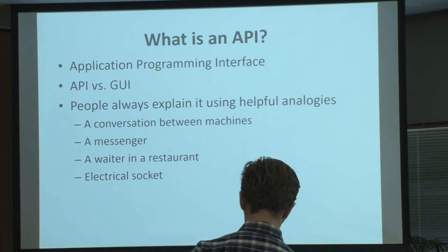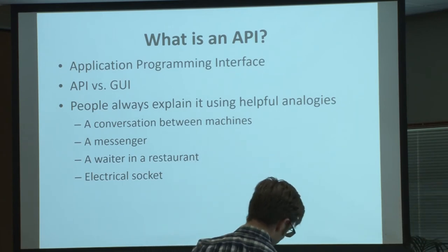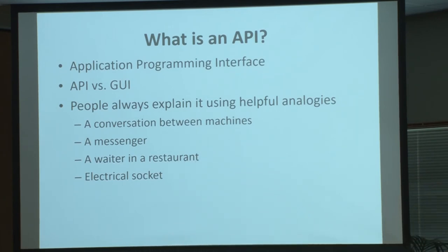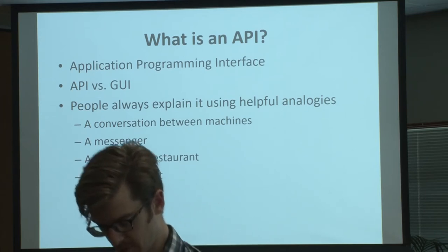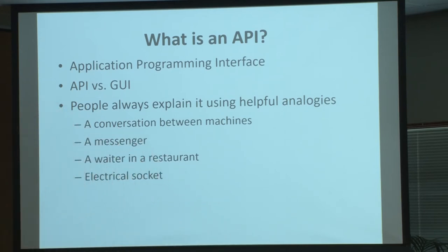So what is an API? The Wikipedia page says: 'In computer programming, an application programming interface, API, is a set of subroutine definitions, protocols, and tools for building application software. In general terms, it is a set of clearly defined methods of communication between various software components.' That did not help me at all.